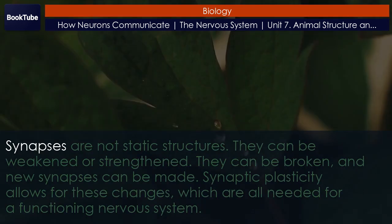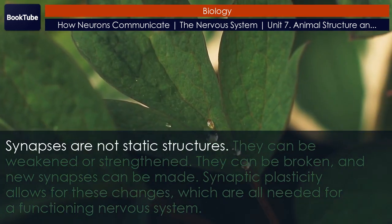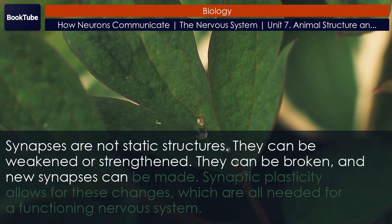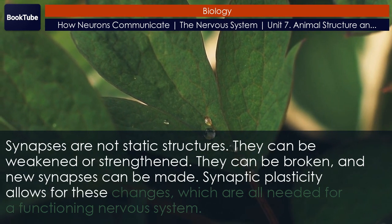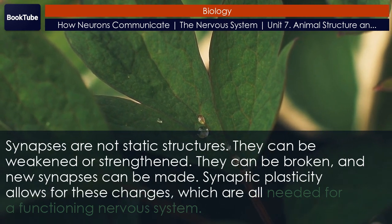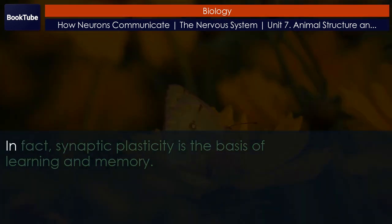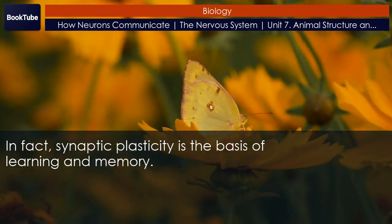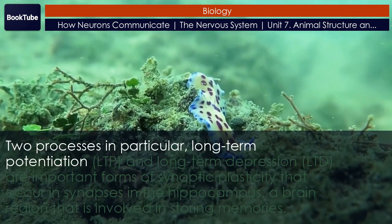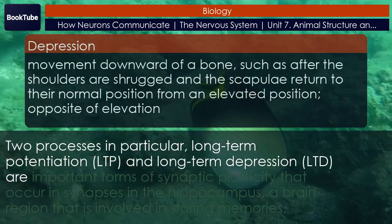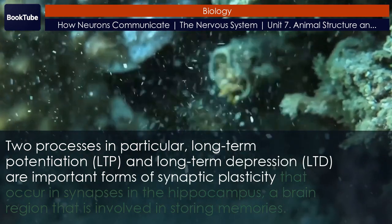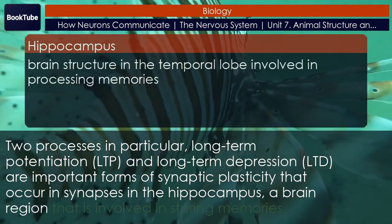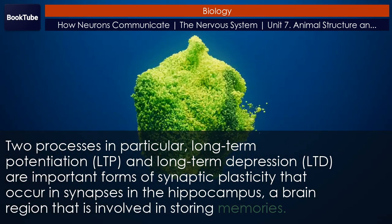Synaptic plasticity. Synapses are not static structures — they can be weakened or strengthened, they can be broken, and new synapses can be made. Synaptic plasticity allows for these changes, which are all needed for a functioning nervous system. In fact, synaptic plasticity is the basis of learning and memory. Two processes in particular — long-term potentiation (LTP) and long-term depression (LTD) — are important forms of synaptic plasticity that occur in synapses in the hippocampus, a brain region that is involved in storing memories.